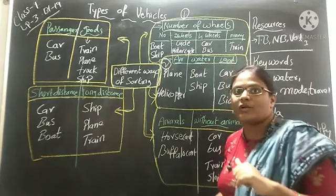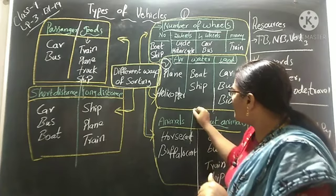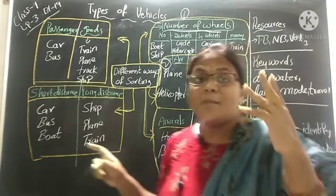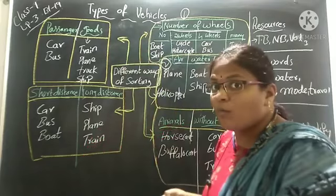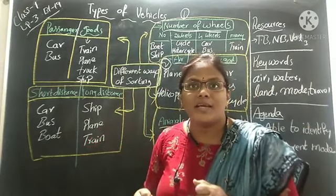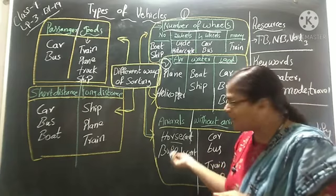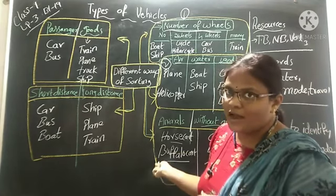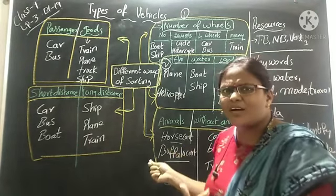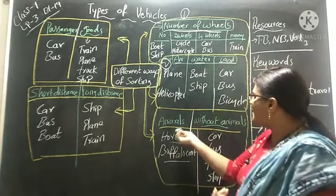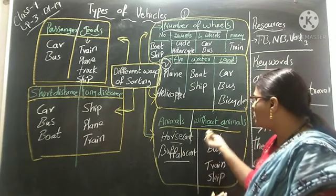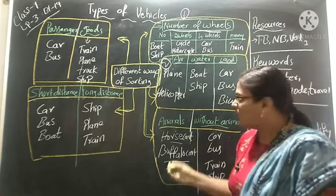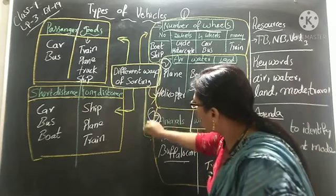Third: we can differentiate vehicles by animals and without animals. In olden days, vehicles moved with the help of animals — bullocks, horse. For example: horse cart, buffalo cart. In olden days, people used to travel on these carts only. Without animals: car, bus, train. With animals: horse cart, buffaloes. Without animals: bus, train, ship. This is the third point.